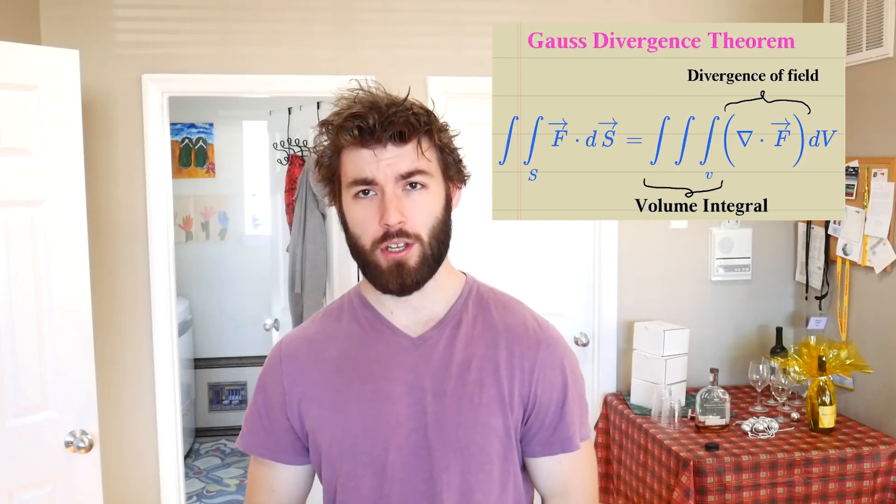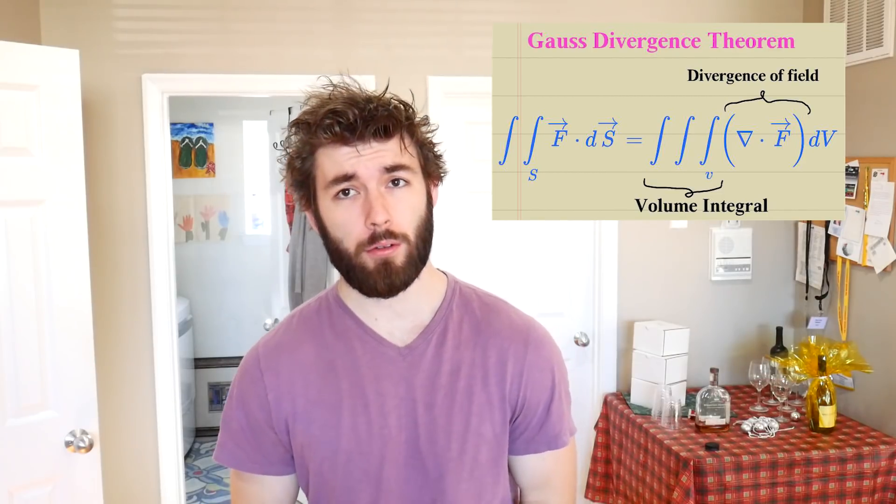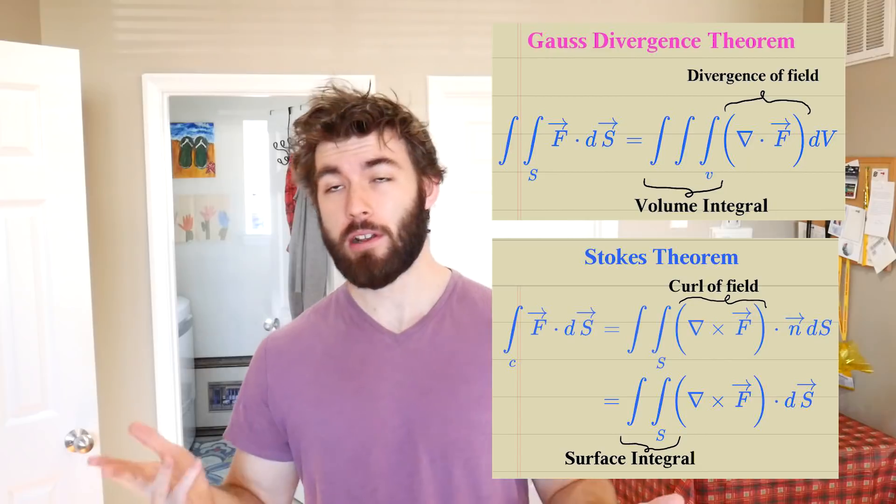The Divergence theorem is a fancy way of doing three integrals for the price of two. Similarly, Stokes' theorem is like doing two integrals for the price of one. These theorems are a convenient way of reducing the dimensionality of a problem by exploiting some symmetry the system has to offer. If there was ever a math theorem your professors made you memorize, it would be this one — especially in your electrodynamics class. These theorems also have a lot of use in fields like fluid dynamics, which is actually how Maxwell viewed electricity and magnetism, which is why we use terms like current flowing — words that sound suspiciously like a fluid.